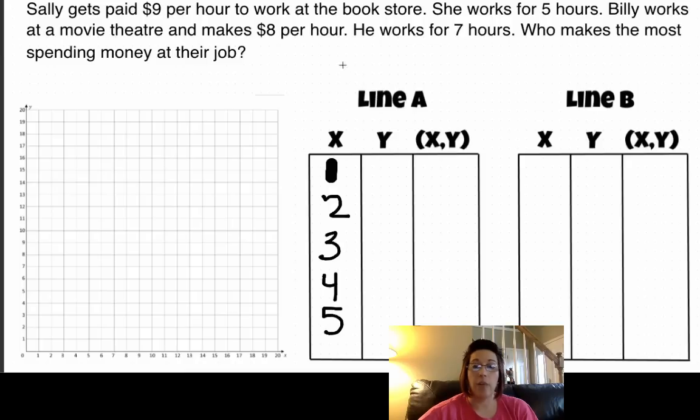There's the five hours. So Sally makes $9 per hour. So if we take nine, multiply it by the hours, it's going to equal Y or the amount that she made. So nine times one is nine. Our ordered pair would be one, nine.